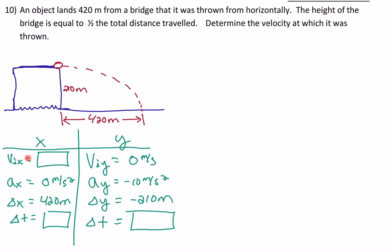We don't know the initial velocity in the x direction — that's what we're trying to find. The initial velocity in the y direction is 0. Acceleration in x is 0. Delta x equals 420. Delta y is negative 210 — negative because it falls downward in the negative direction. Delta t is also unknown and is what connects the horizontal and vertical directions. There are two main equations. Pause the video, set those up, and see if you can figure it out.